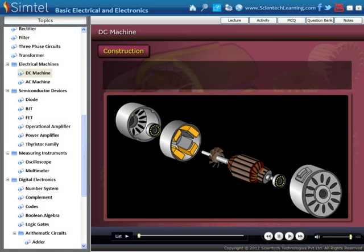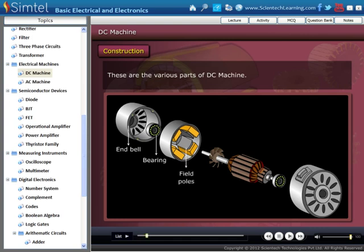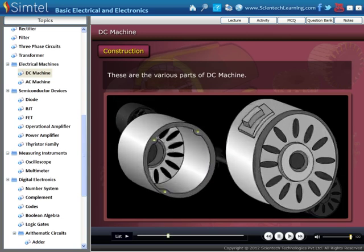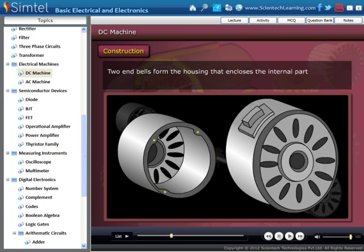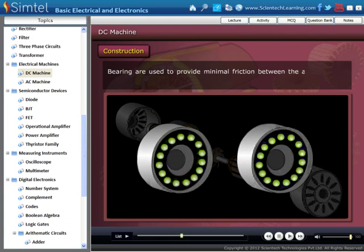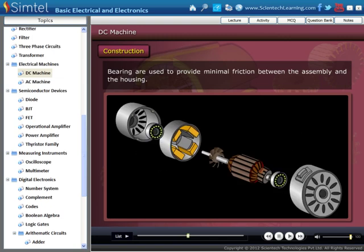Let's see construction of DC machine. These are the various parts of DC machine. Here, two end bells form the housing that encloses the internal parts. Bearings are used to provide minimal friction between the assembly and the housing.